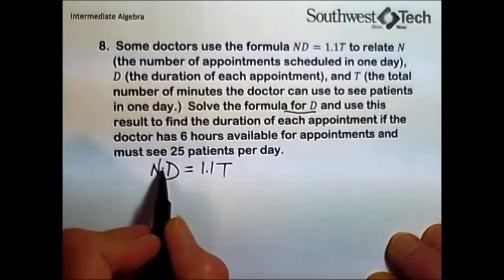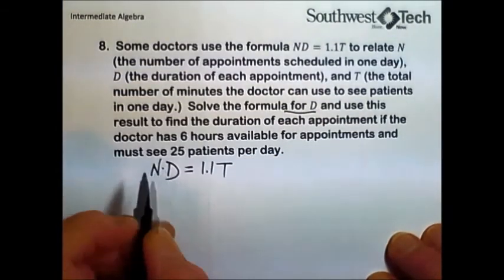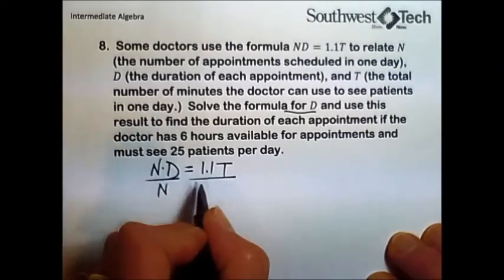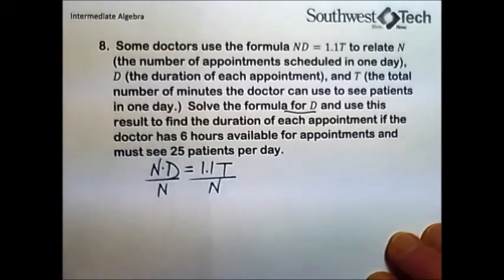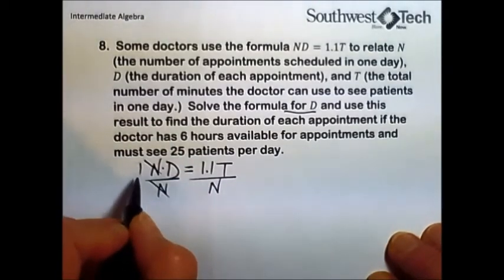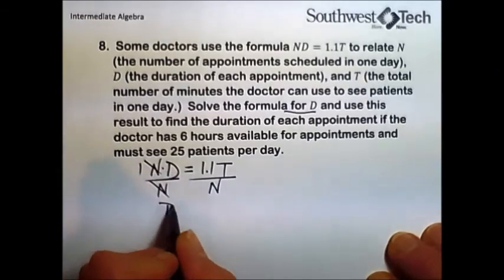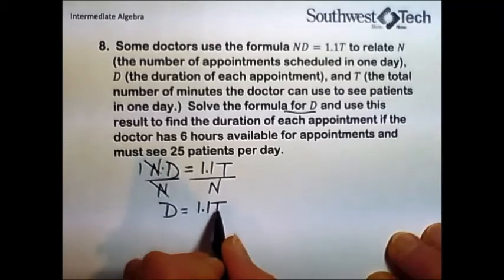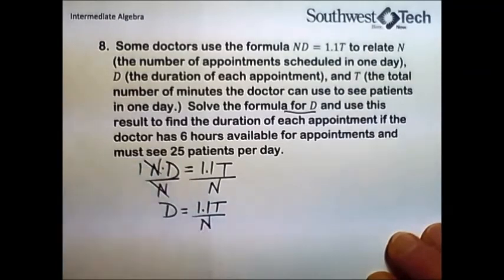Let's do the first part. Solve the formula for D. N is the number of appointments scheduled times D, the duration of each appointment, equals 1.1 times T, the total number of minutes with the doctor. What we are interested in is just simply solving for D, and the only thing happening to D is it's being multiplied by N. So we will divide the left by N. To maintain equality, we'll divide the right by N. N divided by N is 1, 1 times D is D. And D equals 1.1 times T over N.